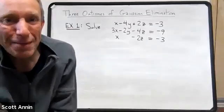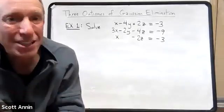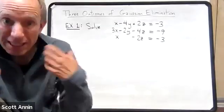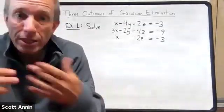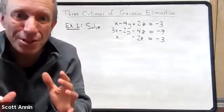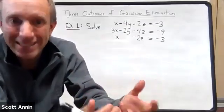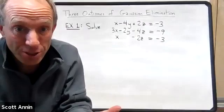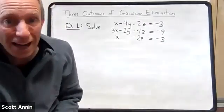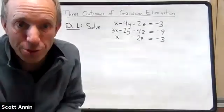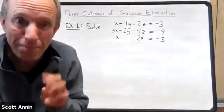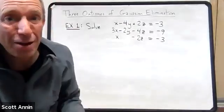Well hi everybody. I'm back to give you a quick little mini lecture about the three outcomes of Gaussian elimination. Gaussian elimination is the process we use to solve a linear system of equations by taking that linear system, putting it into an augmented matrix, and using elementary row operations to bring that matrix into row echelon form. There are three different scenarios that can come up, and I'm going to do three examples right now to show you those three different outcomes.